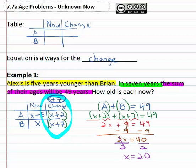But who is x? Brian is x, right? Brian is twenty years old. Yeah Brian is twenty and Alexis is fifteen.